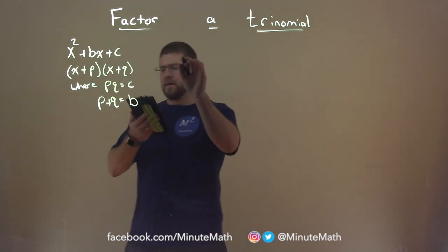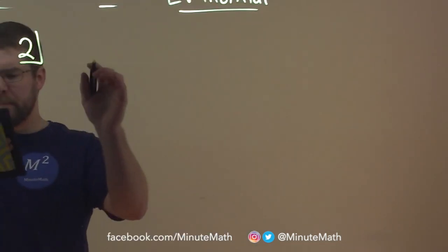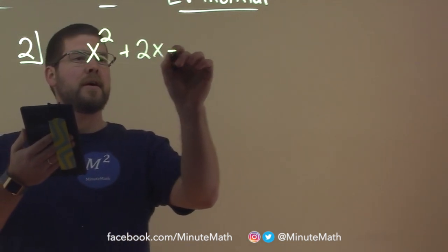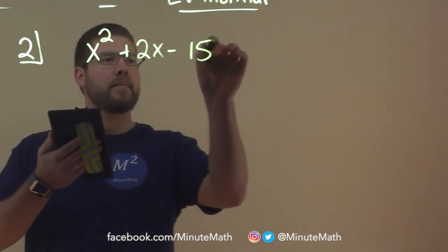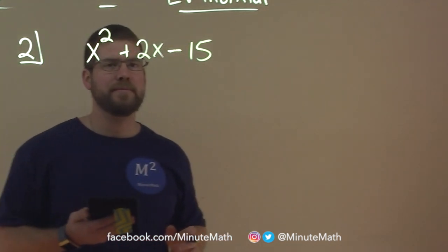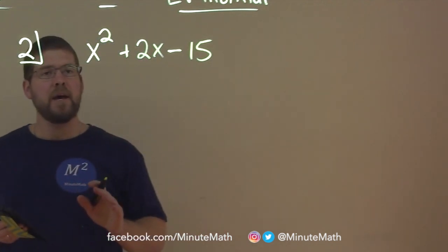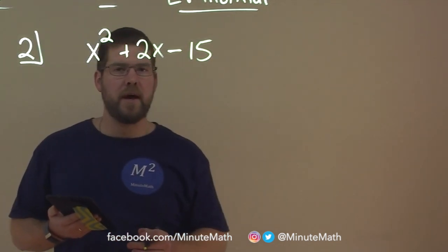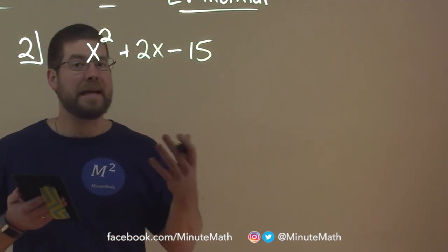Let's go with an example and see if we can do it. We have x squared plus 2x minus 15. There are a few ways to do this. Some people like to make tables, and as you get better you can run through possibilities in your head. But for this first one we're going to make a table.